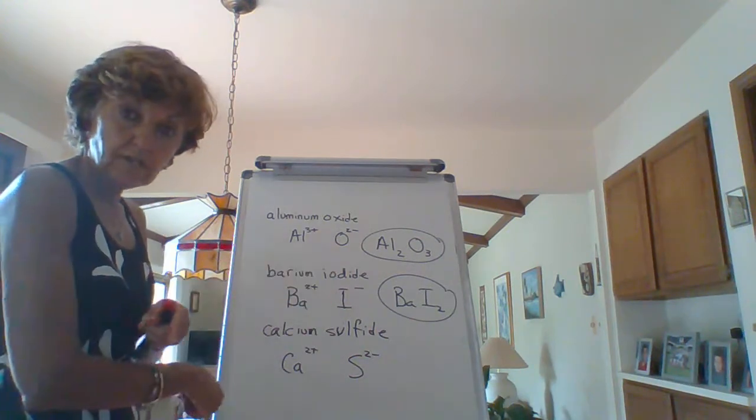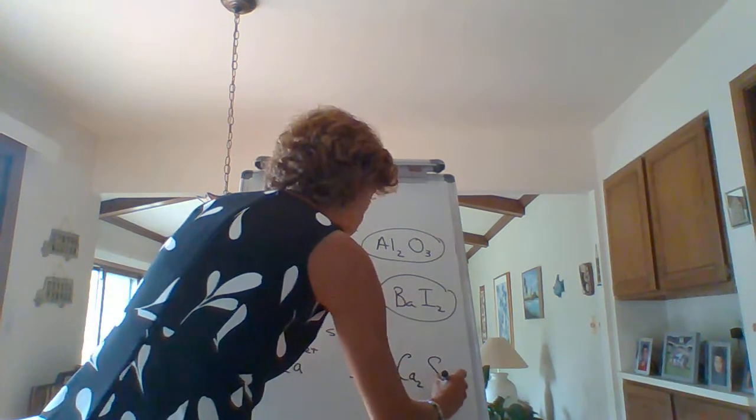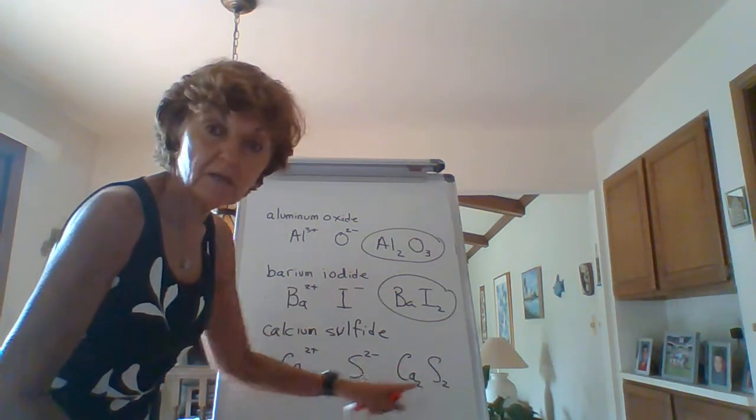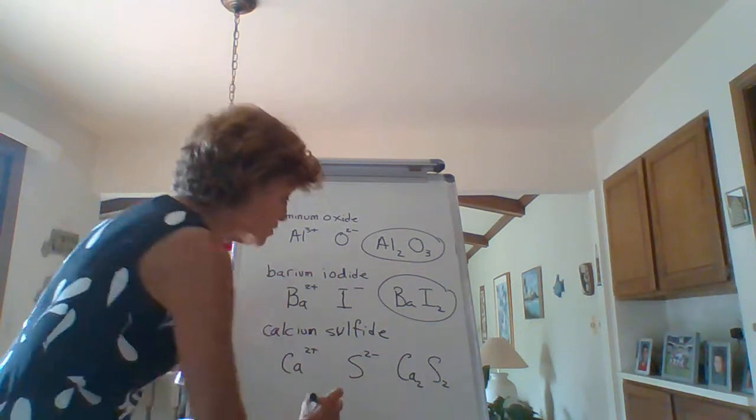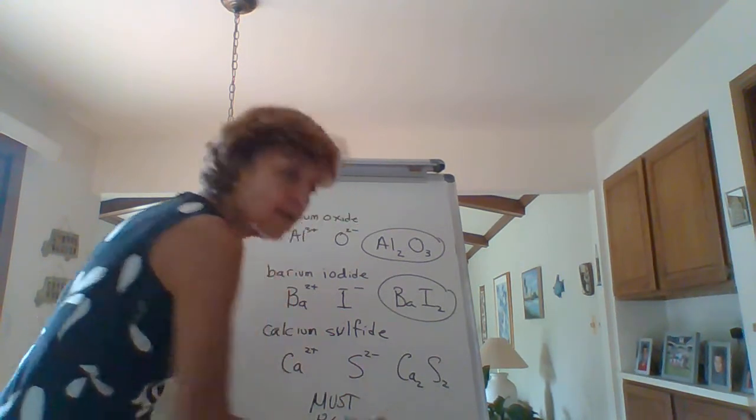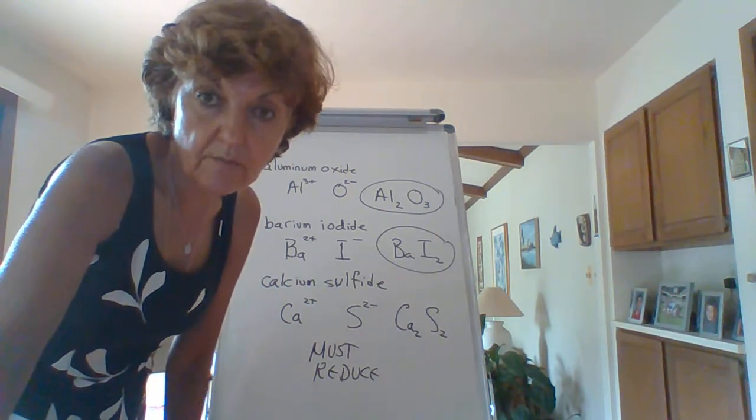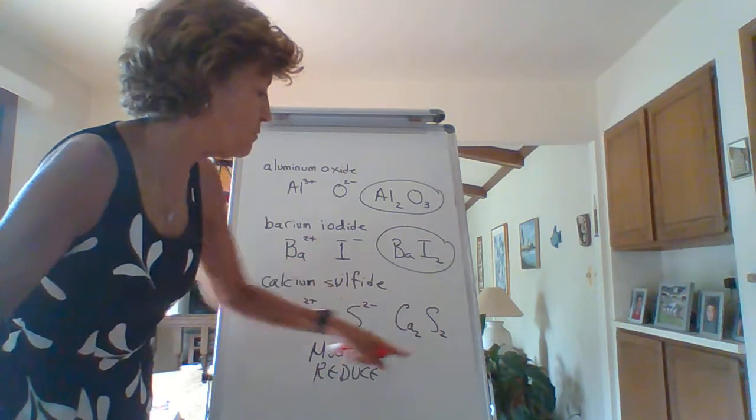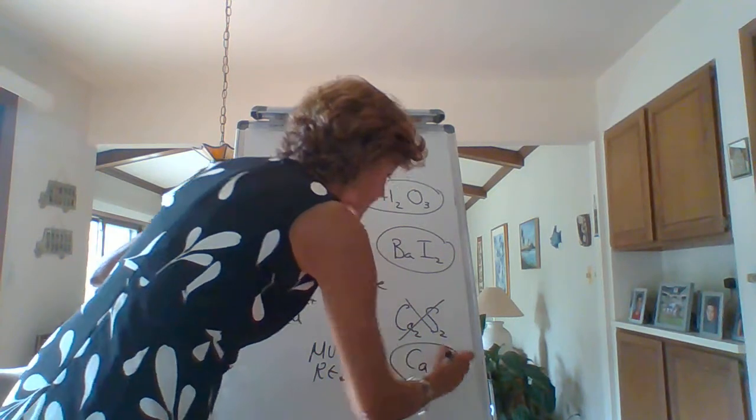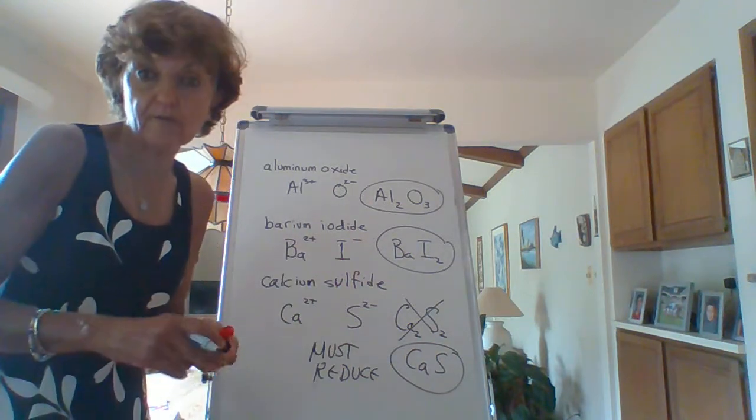Okay. We're using this crisscross technique. You put a 2 here and a 2 here. Ca2S2. But here's the deal. Pay attention. You've got to reduce this. Since they both can be divided by the same number, you must reduce. I'm going to put it in capitals here. Must reduce. You are not allowed to have subscripts that are both divisible by the same number. So this is divided by 2. This is divided by 2. So your final answer, this is illegal. Final answer is CaS. So the crisscross technique works beautifully. You just always have to reduce after that.